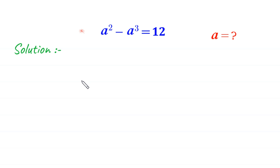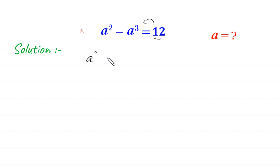Hello everyone, you are welcome. We will solve this algebra equation: a squared minus a cubed is equal to 12. Our job is to find all possible values of a. Let's start by moving this 12 to the left-hand side, so this will become a squared minus a cubed minus 12 is equal to 0.